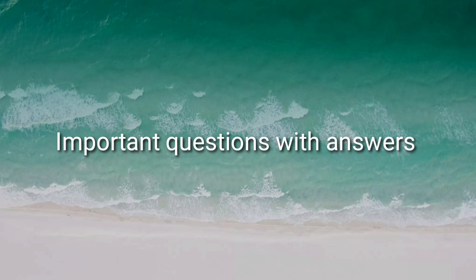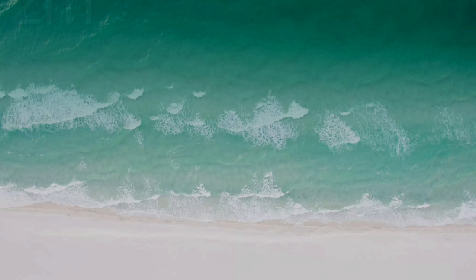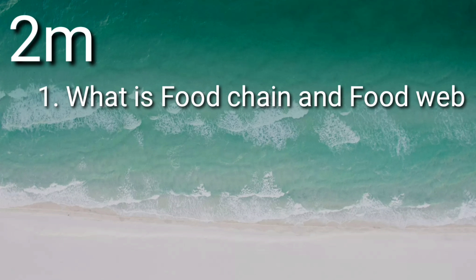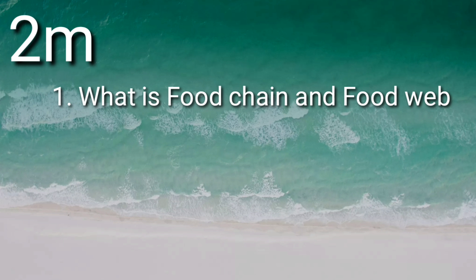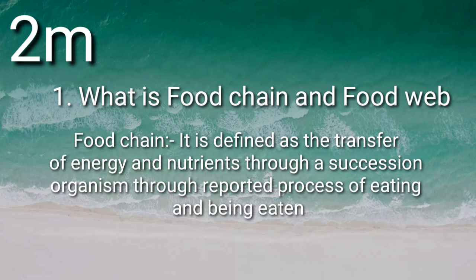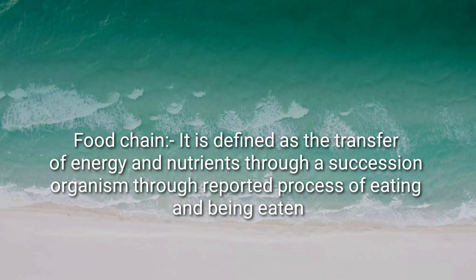First of all, what is food chain and food web? Food chain is defined as the transfer of energy and nutrition through a succession of organisms through a repeated process of eating and being eaten.